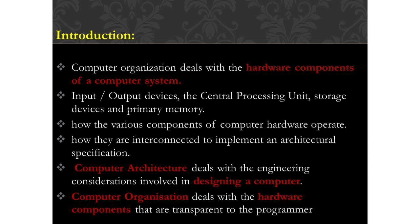Now we will see the introduction to computer organization. Computer organization deals with the hardware components of a computer system. It includes input/output devices, the central processing unit, storage devices, and primary memory. Computer organization means it deals with the hardware components — the physical components of the computer system.